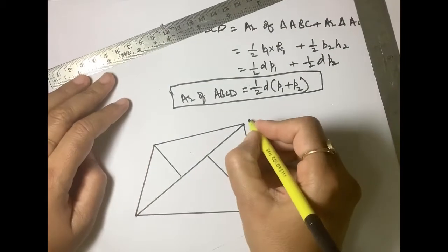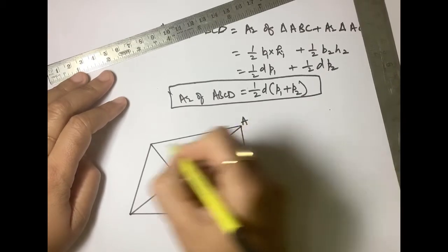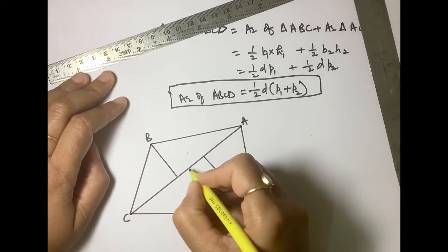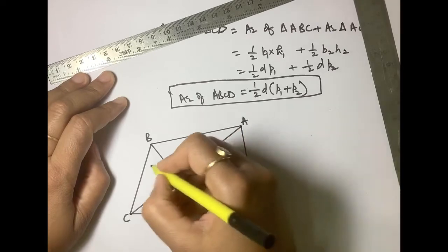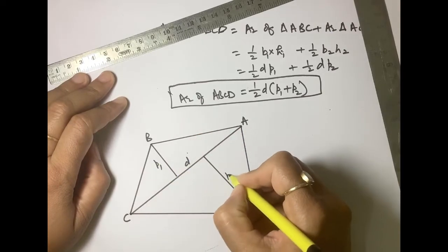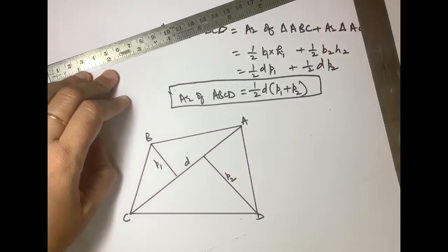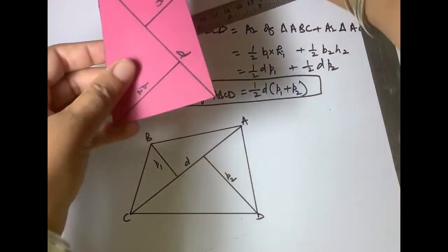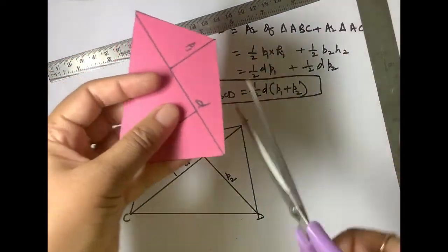This is A, B, C, D and this is D and this is P1 and this is P2. Now we cut the figure into four pieces.